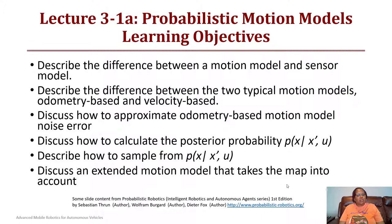Hello and welcome back. Today we will have Lecture 3-1a on Probabilistic Motion Models. The learning objectives for today's lecture include describing the difference between a motion model and a sensor model, describing the difference between two typical motion models including odometry-based and velocity-based, to discuss how to approximate odometry-based motion model noise error, to calculate the posterior probability of x given x prime and u.